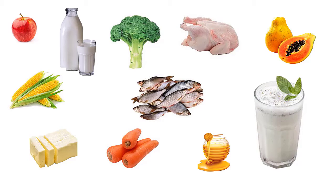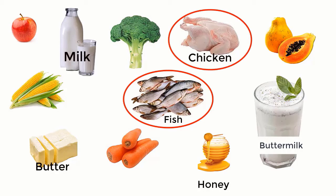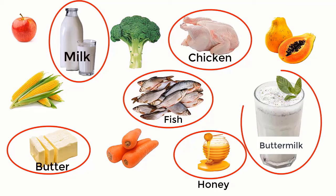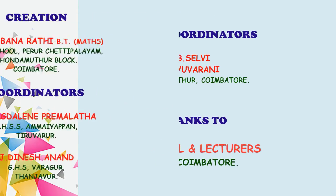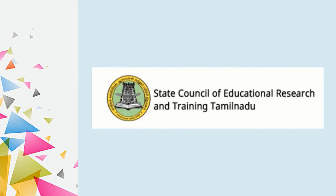Circle the food items getting from animals. Fish. Chicken. Honey. Milk. Butter. Buttermilk. Yes.